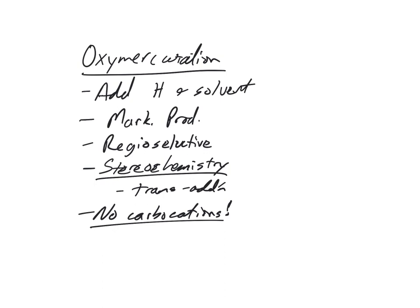Oxymercuration involves mercury (Hg). So looking at another example with an alkene, this would use something with mercury — HgOAc. For the alkene carbons 1 and 2, we add H and solvent. The solvent is often something like water or an alcohol. So you add hydrogen and whatever the solvent is to the Markovnikov side — the more substituted carbon.